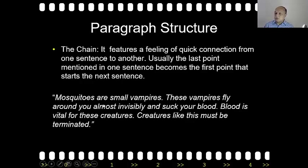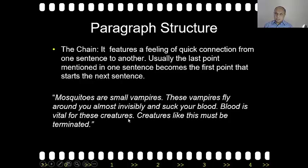For example: 'Mosquitoes are small vampires.' Notice the word 'vampires' ends this sentence. Then 'vampires' starts the next sentence: 'These vampires fly around you almost invisibly and suck your blood.' 'Blood' is the last point mentioned, and it starts the next sentence: 'Blood is vital for these creatures.' And 'creatures,' the last point there, starts the next: 'Creatures like this must be terminated.' This is the Chain structure.